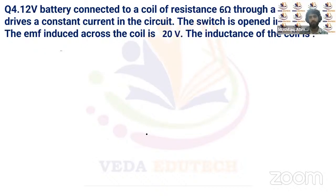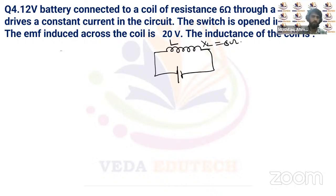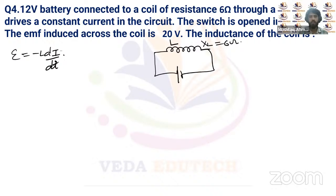Question five: a 12 volt battery is connected to a coil (inductor). The coefficient of self-inductance is L and resistance is 6 ohm. It drives a constant current. The switch is opened in 1 millisecond and the induced EMF across the coil is 20 volts. We know that EMF induced = −L(dI/dt) for an inductor.